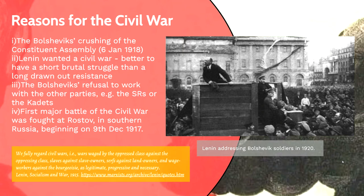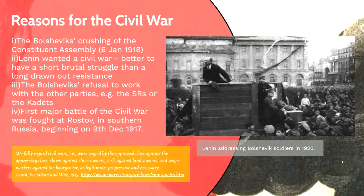From when it was first created, the Bolsheviks and Lenin — Lenin in particular — did not like working with other parties. Even before the October Revolution, in his 'Letters from Afar,' he criticised Kamenev and Stalin after the February 1917 revolution for working alongside other political groups. He said it was wrong and that they had to stick to their own aims. The first major battle of the Civil War was fought at Rostov in southern Russia, beginning on the 9th of December 1917. The photo shown is of Lenin addressing Bolshevik soldiers in 1920, with Trotsky visible looking in the opposite direction.